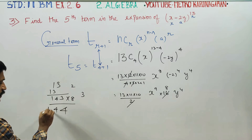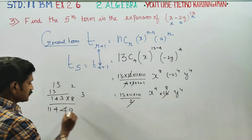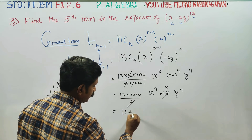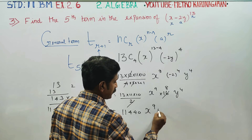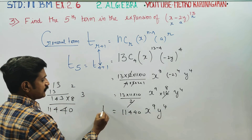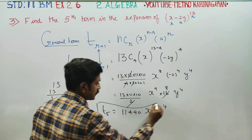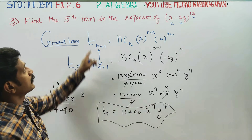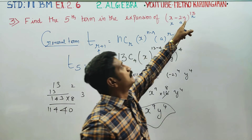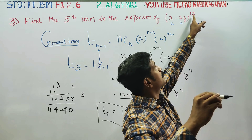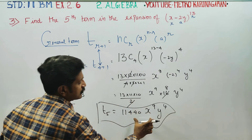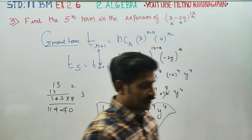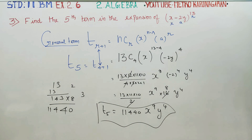The result is 1144. So the 5th term is 1144 · X^9 · Y^4. In this expansion there will be 14 terms in total (since N=13), and this is the 5th term. The answer using the general term formula is 1144 x^9 y^4. This is very easy — thank you.